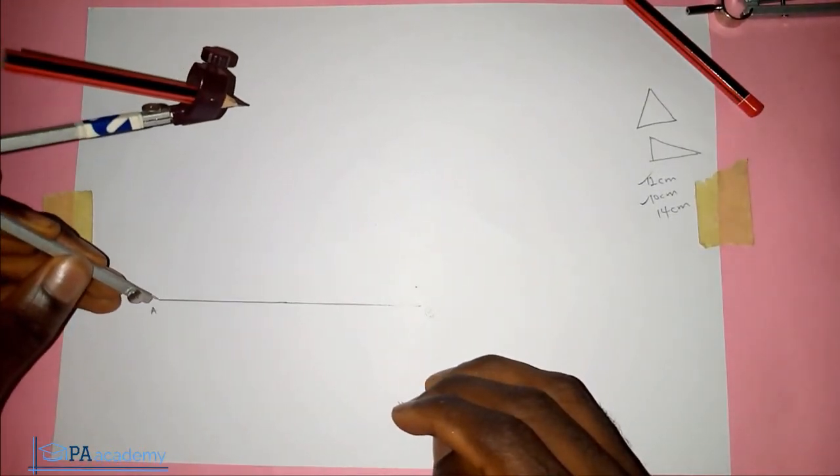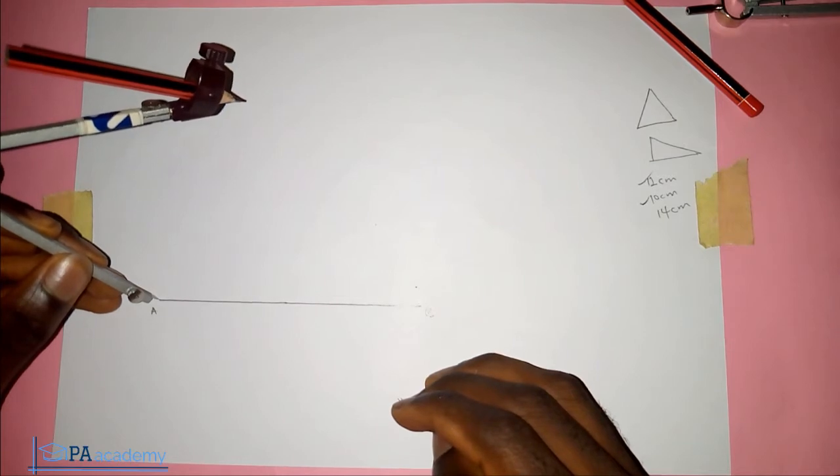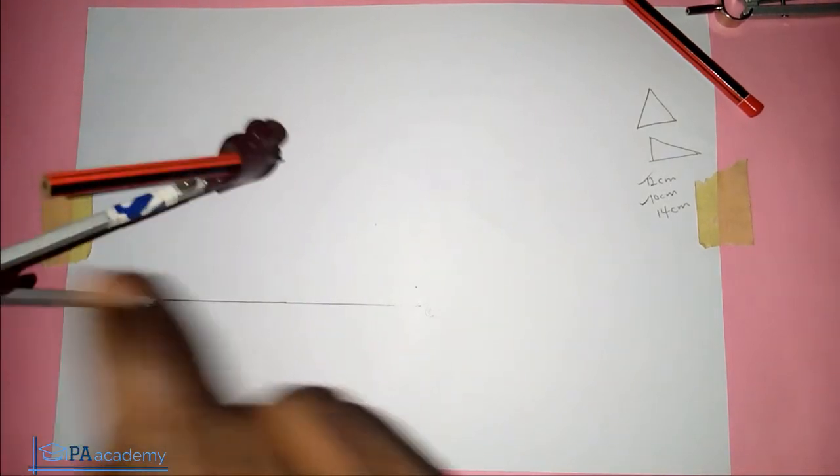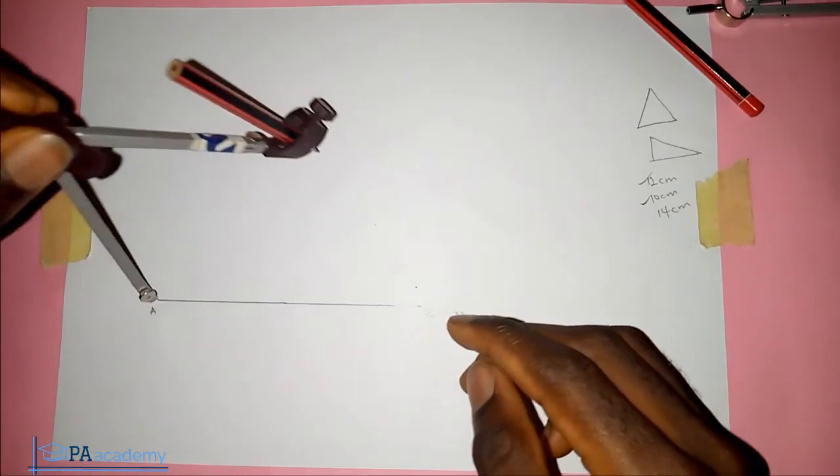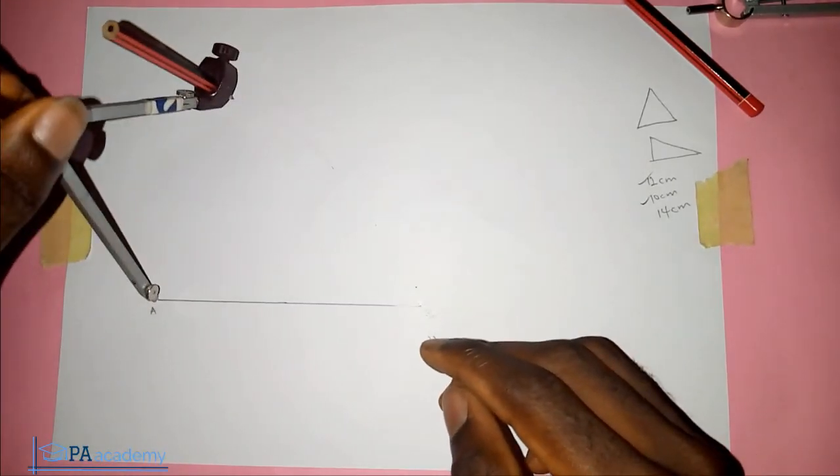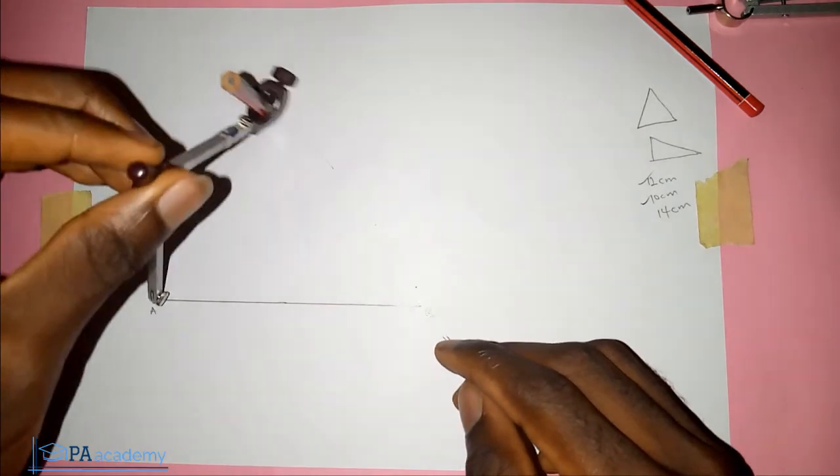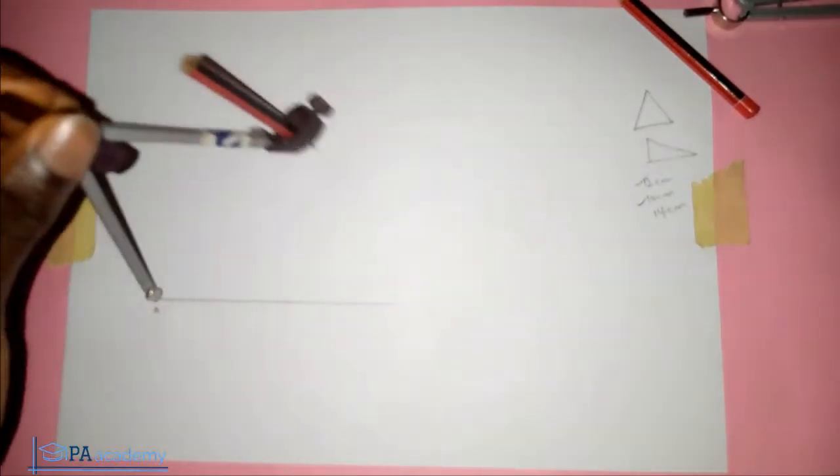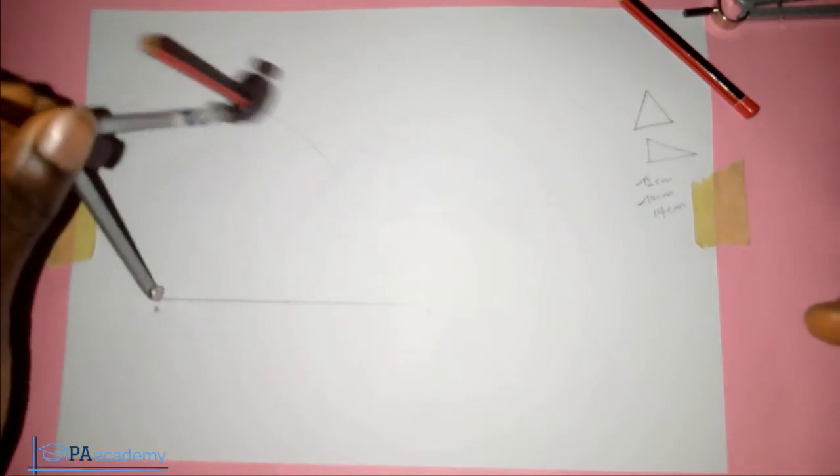So from point A, if I put my compass on point A at the same 10 cm, just make sure that your compass is not shaky, you draw an arc. So you draw an arc. This arc is for 10 cm.